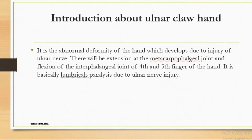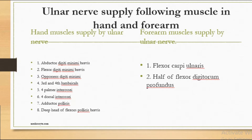The muscles supplied by the ulnar nerve in the hand region include: abductor digiti minimi brevis, flexor digiti minimi brevis, opponens digiti minimi, third and fourth lumbricals, all palmar interossei, all dorsal interossei, adductor pollicis, and the deep head of flexor pollicis brevis.